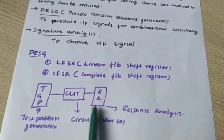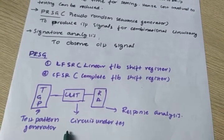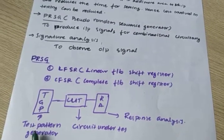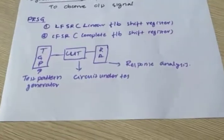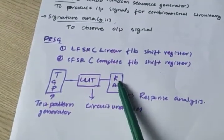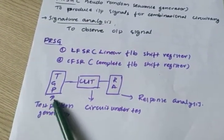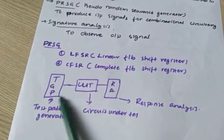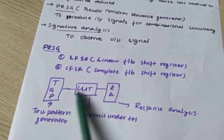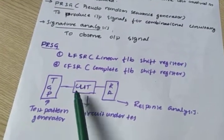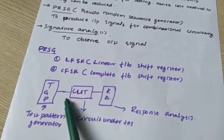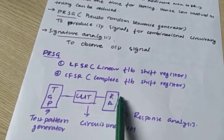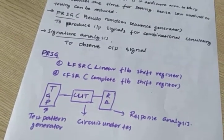This is the general outline. TPG means test pattern generation. There is the circuit under test, and this is the response analysis. The test pattern generator generates test vectors or test variables, which are used to test the circuit under test. The result is analyzed with the response analysis.